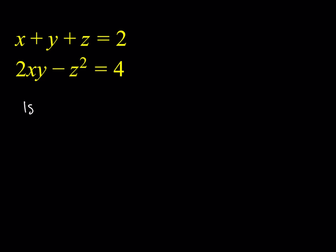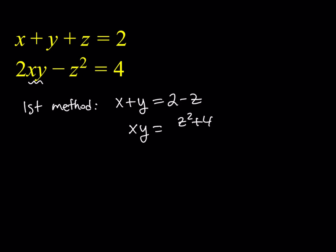So the first method involves some interesting algebraic manipulations. I'm going to isolate x plus y. So x plus y is equal to 2 minus z. And then from the second equation, I'd like to isolate xy — I'll tell you why in a little bit. If I do that, I'll be getting z squared plus 4, all over 2. You can just add z squared and divide by 2.